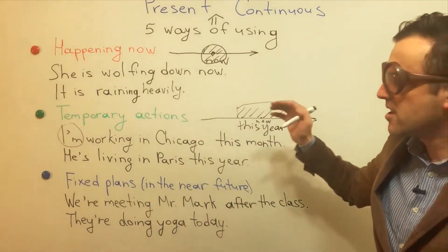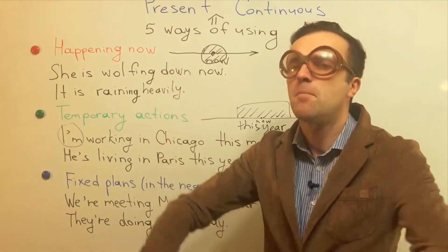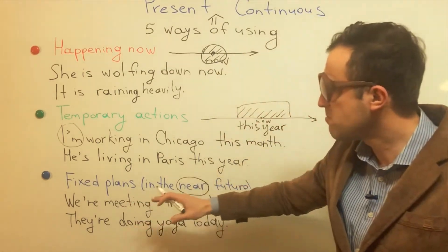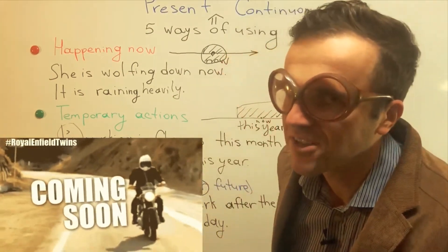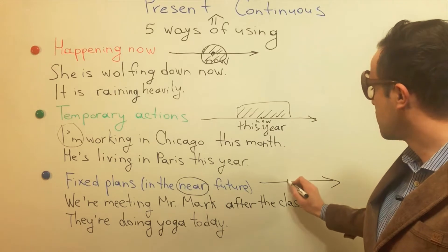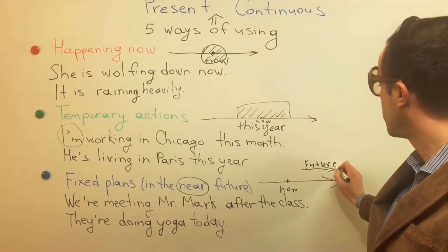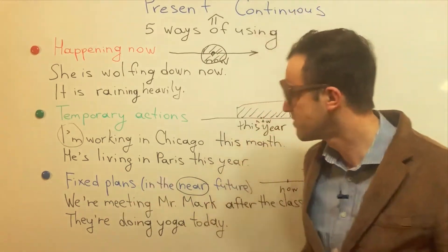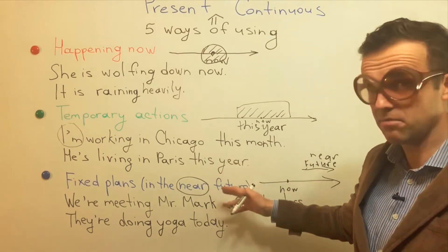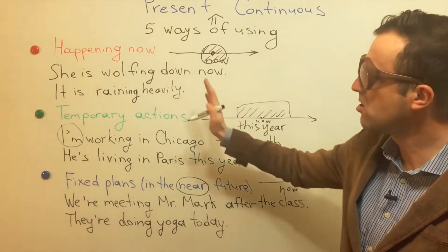The third way is fixed plans — plans that are in the near future. For example: 'We are meeting Mr. Mark after the class.' This action is taking place in the near future. Another example: 'They are doing yoga today.' Today counts as the near future for a fixed plan.